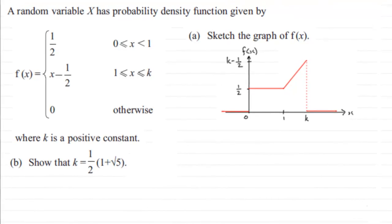Hi. Now in this next part of the question, we've got to show that the constant K is equal to a half multiplied by 1 plus root 5.